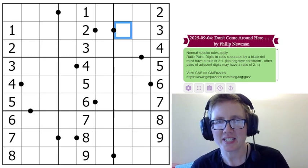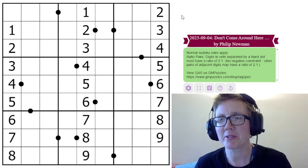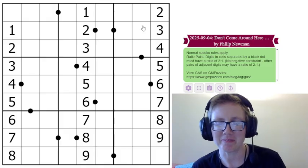Hello my friends, I'm Clover and this is Genuinely Approachable Sudoku, and today we're solving Don't Come Around Here No More by Philip Newman.